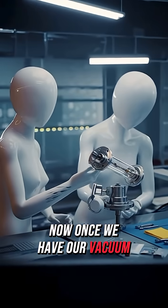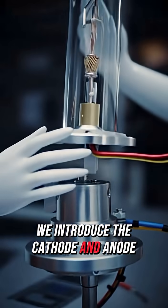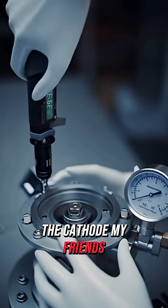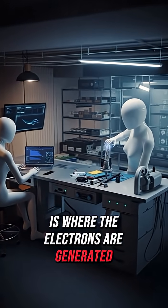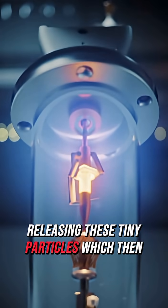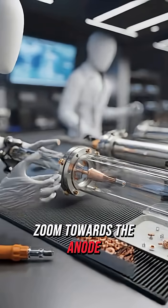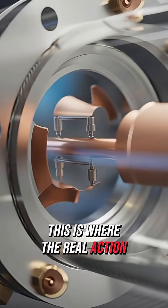Now, once we have our vacuum, we introduce the cathode and anode. The cathode is where the electrons are generated. It heats up, releasing these tiny particles which then zoom towards the anode. This is where the real action happens.